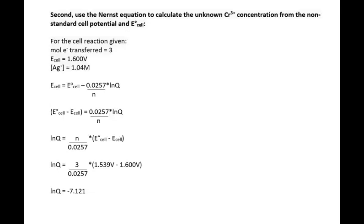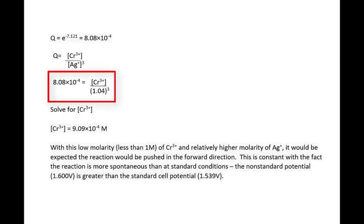I rearranged the Nernst equation to solve for the natural log of Q. Once rearranged symbolically, I substitute the numbers for N and the voltages, and solve for the natural log of Q as negative 7.121. Remember, Q is the ratio of product over reactants. Taking the inverse natural log, I get Q to be 8.08 times 10 to the minus 4. Q is the ratio of the chromium ion over the silver ion cubed. We know the concentration of the silver ion is 1.04. After substituting that value and solving for the chromium ion, the chromium ion concentration is very small — as we anticipated, smaller than the silver ion concentration.